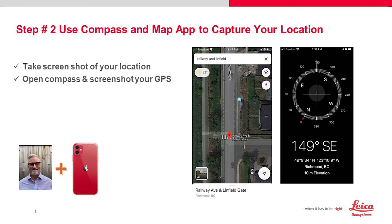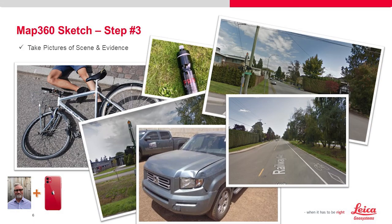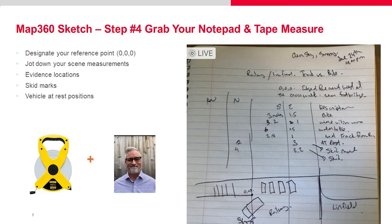First thing we do when we roll up is grab our phone and find out where we are. This is just down the street from my house in Richmond, British Columbia, so we can get the GPS and take a screenshot — a good start for grabbing aerial images later. We then go snap some evidence of the scene: the bike, the victim, where a water bottle flew to, and the surrounding neighborhood.